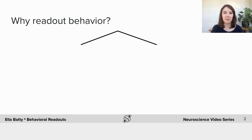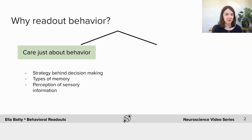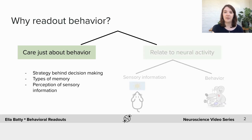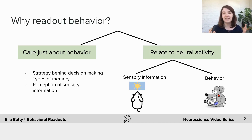So let's start with why we want to read out behaviour. We often just care about behaviour itself, so just by studying the behaviour of animals we can start to understand the strategies they use behind decision making, the types of memories they form and the qualities of those memories, and how they perceive sensory information, among many other things. As neuroscientists though, we often also want to relate behaviour to neural activity, so typically when we're recording from the brain of an animal we want to relate it to something the animal is experiencing or doing.